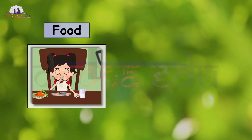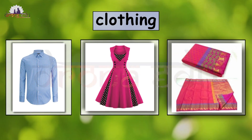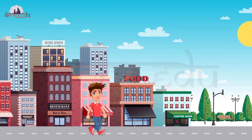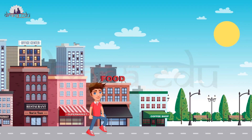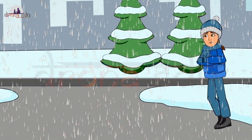Food, shelter, and clothing are the three basic needs of every individual. Clothes protect us from heat, cold, and rain.